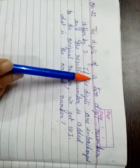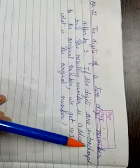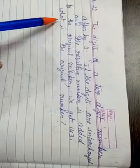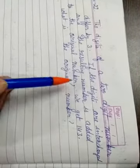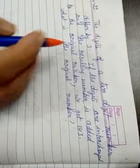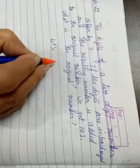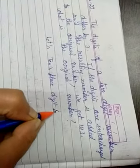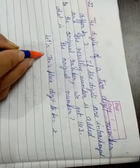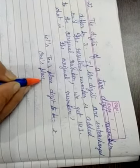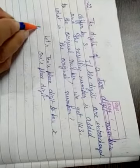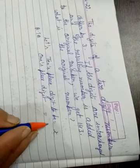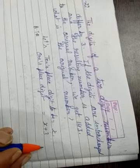Now, question number 22. The digits of a 2 digit number differ by 3. If the digits are interchanged and the resulting number is added to the original number, we get 143. What is the original number? So children, in this first what is given, the digit of a 2 digit number differ by 3. So let's say tens place digit is x. And ones place digit according to question will be what children? It differs by 3. It means it is either 3 more or less than x. So we will take x plus 3. It differs by 3.